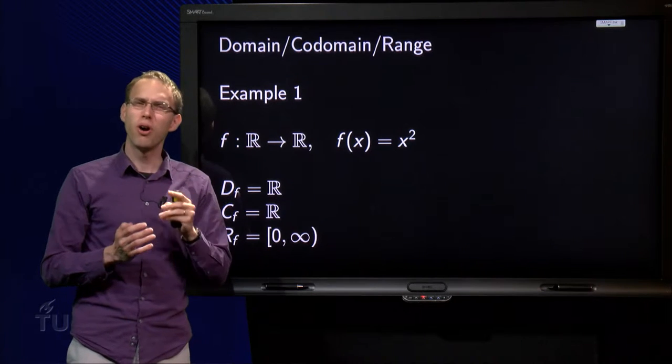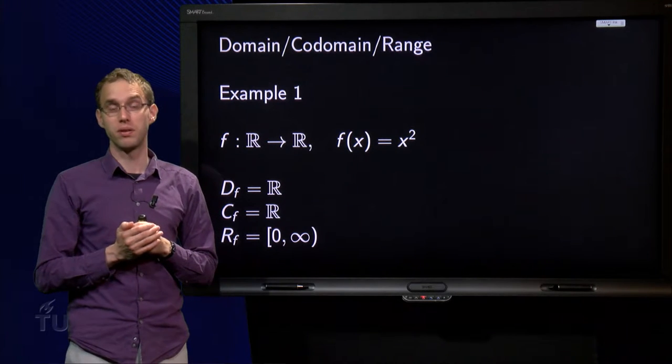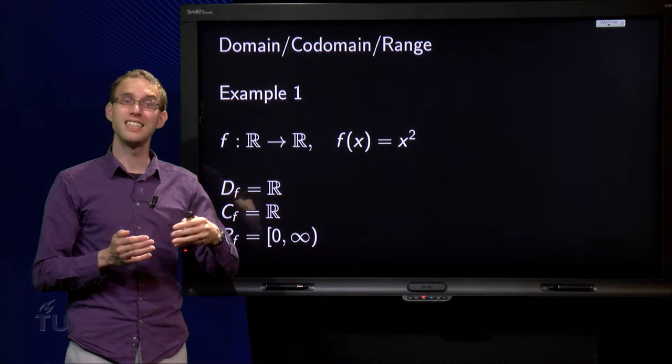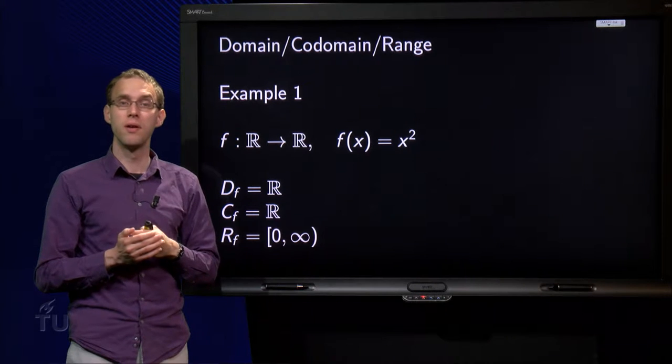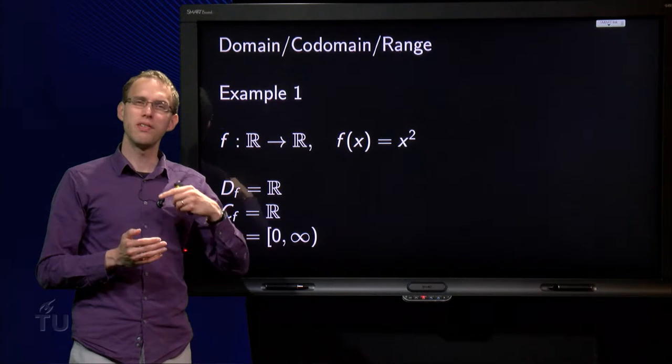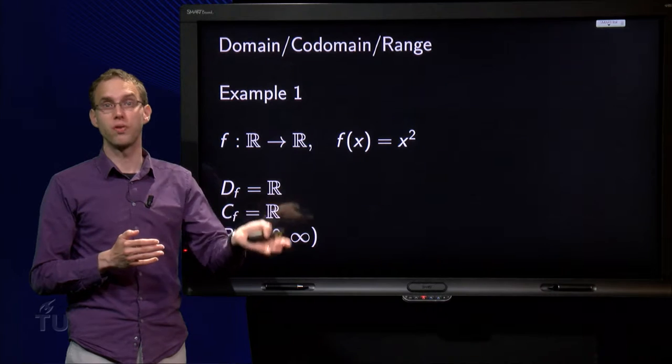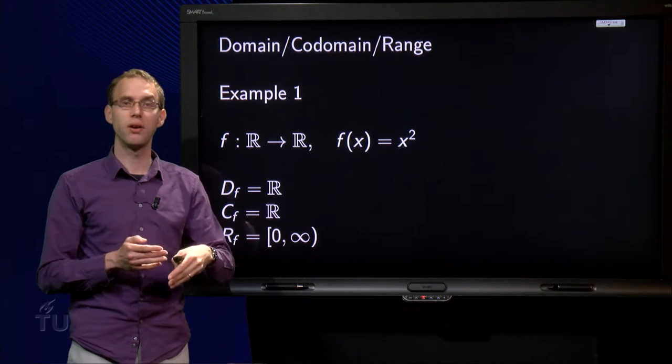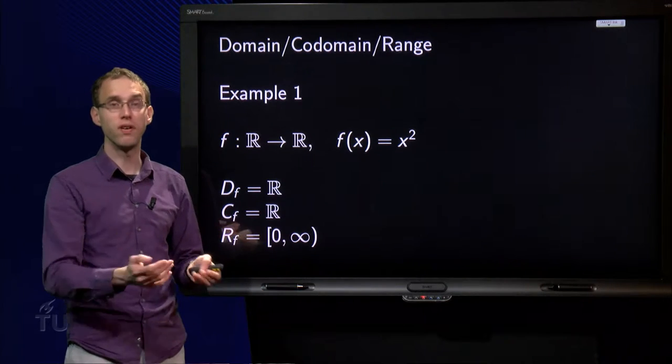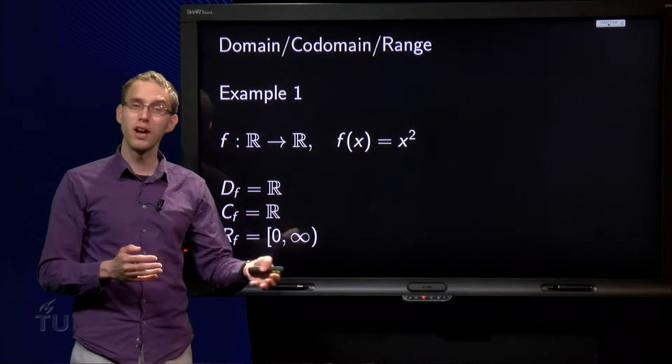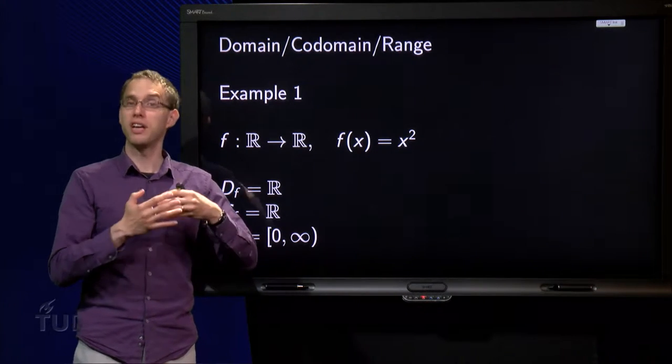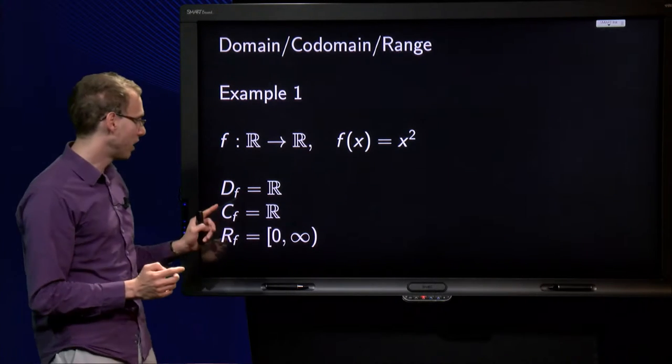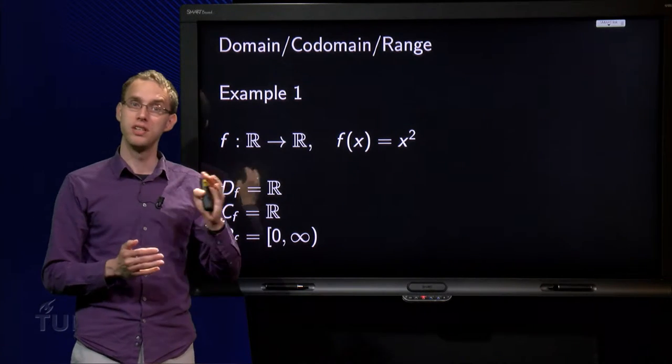For the range, you often have to think a bit more. The range is the set of all values which are actually attained by the function. What is that in this case? If I square a number, say 2 squared, we get 4, 0 squared yields 0, minus 1 squared yields plus 1. If I square numbers, I can get only positive values, and I will get all positive values. So in this case, the range of the function f will be [0, ∞).